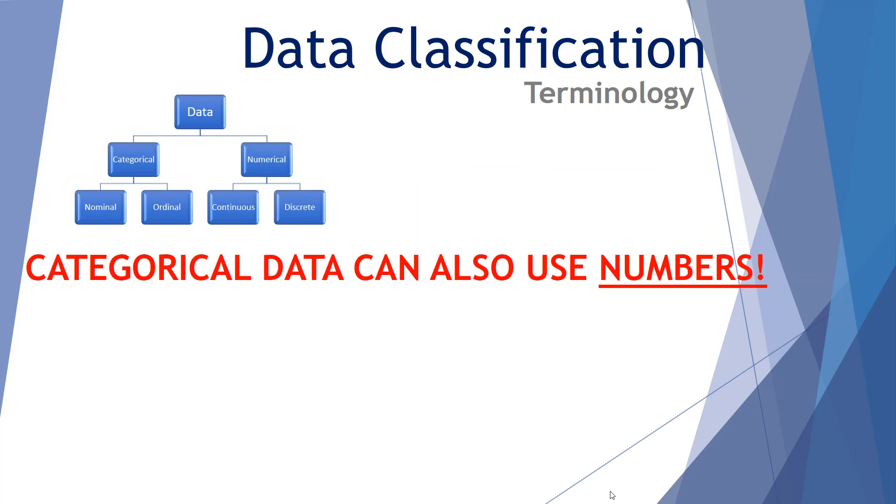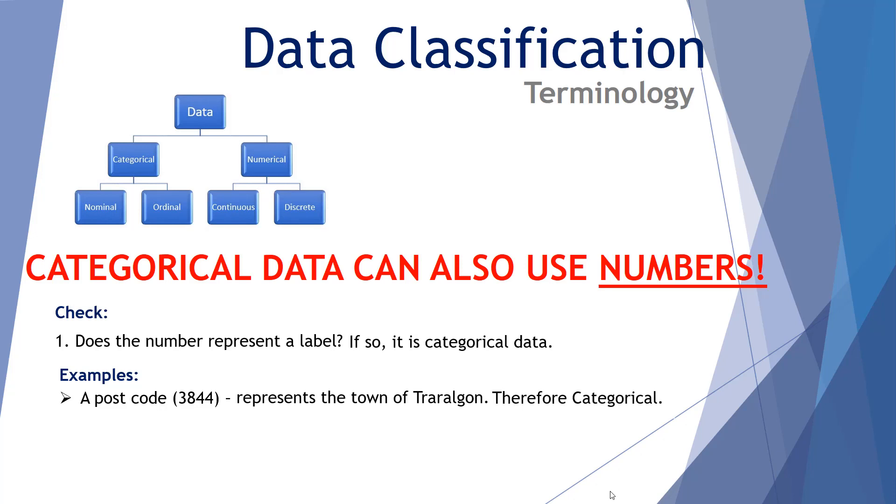Categorical data can also use numbers. So not all numbers are associated with numerical data. Let's check. Number one, does the number represent a label? If so, it is categorical data. An example would be a postcode. Take 3844. This represents the town of Oregon. Effectively, this postcode operates as a label. It is therefore categorical data. A five star rating system. That involves numbers one through five. However, that represents a bad to excellent experience. Therefore, it too is categorical.